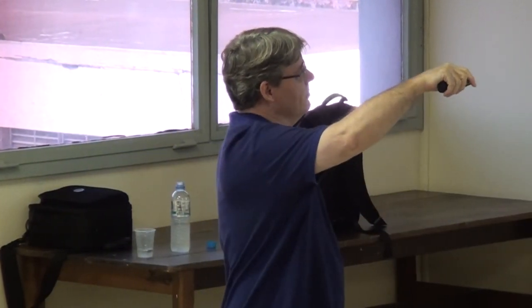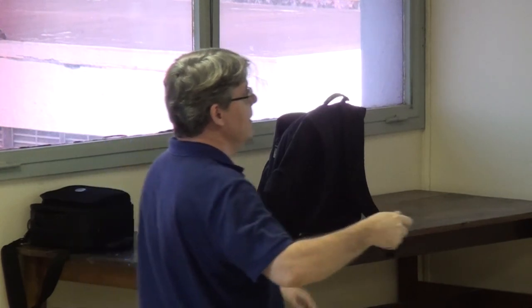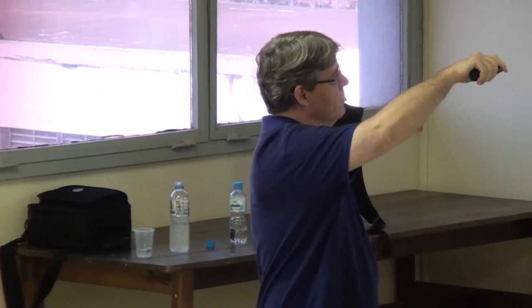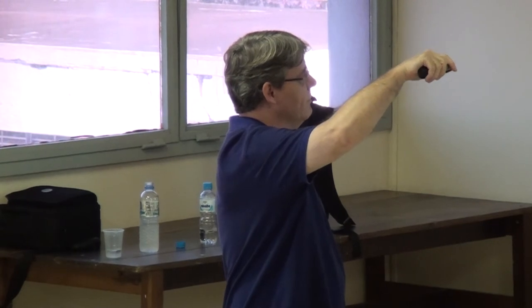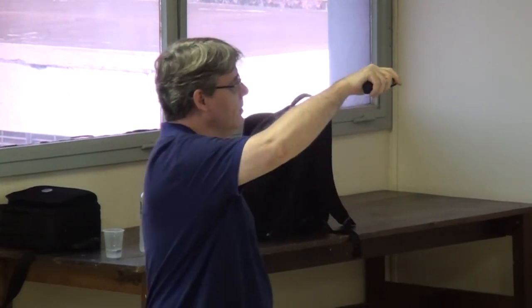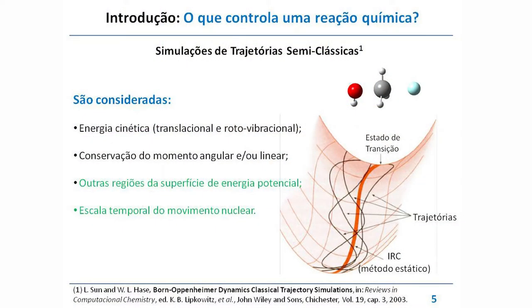Quando dizemos efeitos dinâmicos, estamos querendo dizer que as moléculas, para ir dos reagentes aos produtos, têm que colidir, e o produto principal da reação vai depender dessa energia cinética de colisão, seja na forma translacional, seja na forma ro-vibracional. Existem casos em que a teoria de estado de transição não leva em consideração a conservação de momento — seja momento angular ou momento linear — que às vezes é importante para a seletividade da reação.